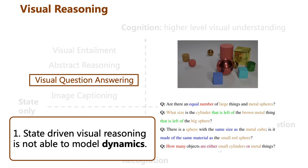For example, visual question answering may ask complex questions about the relation between objects in the image. However, these kind of state-driven tasks are not able to model dynamics.